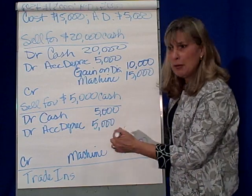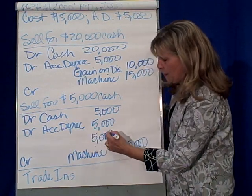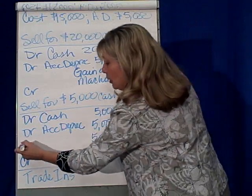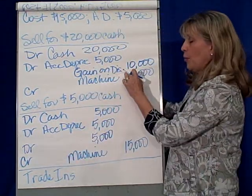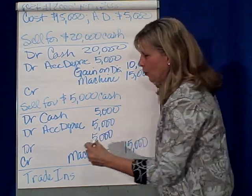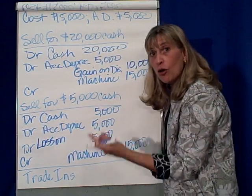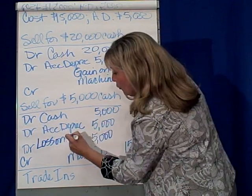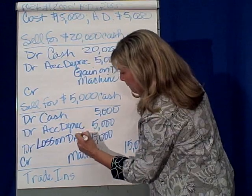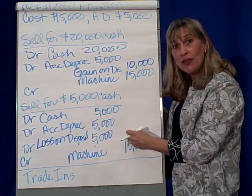But do debits equal credits? No. I need another debit to make this thing balance. If I need a debit, it's called not a gain on disposal but a loss on disposal. So we've got a loss on sale — or loss on disposal — for whatever we needed to make this thing balance, which is $5,000.